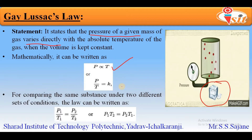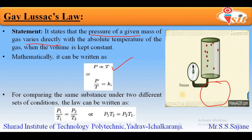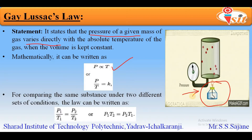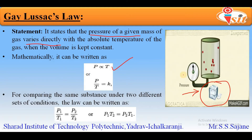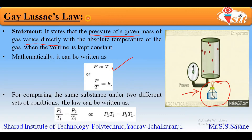Similarly, if we remove heat — as shown in the diagram using ice — with the decrease in heat the pressure of the system decreases, and this change in pressure is observed on the dial gauge. This was all about Gay-Lussac's Law. In the next slide we will start with Avogadro's Law.